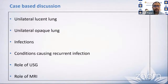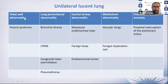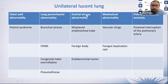Now moving to case-based patterns. The common patterns you encounter in routine practice include: unilateral lucent lung, unilateral opaque lung, recurrent infections, and the role of ultrasound and MRI. Unilateral lucent lung has a long list of causes ranging from chest wall abnormality to lung parenchymal abnormality to central airway pathology to mediastinal abnormality.